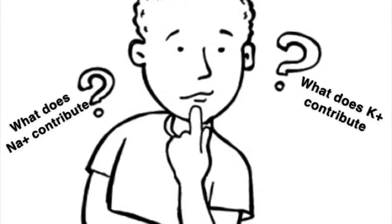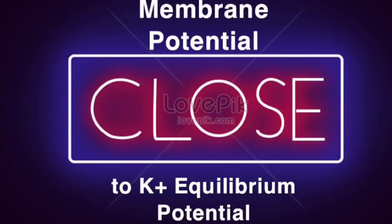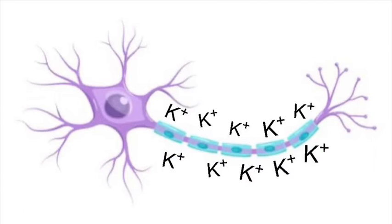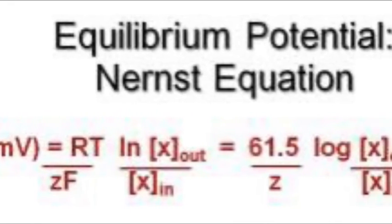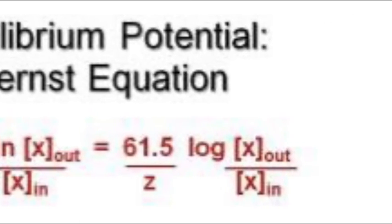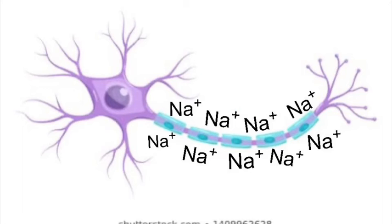Lastly, the researchers wanted to answer the question: what does each ion contribute to the action potential? From studies where Na+ and K+ concentrations were altered, it was found that at rest, the membrane potential of an axon is close to the equilibrium potential of K+, and when the K+ concentration outside of the cell was altered, the resting potential changed roughly in accordance with the Nernst equation. These results suggested that at rest, the membrane is more permeable to K+.